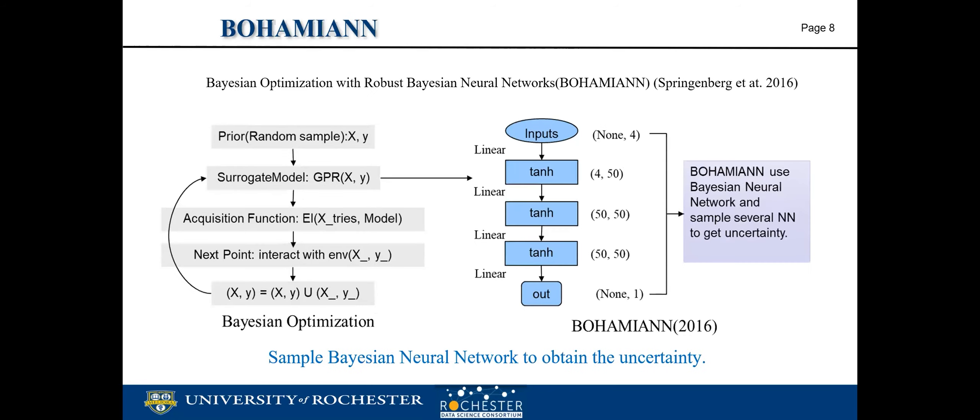This one is called BOMAN, Bayesian optimization with Hamiltonian Monte Carlo artificial neural networks. In their work, they have the same neural network structure as DNGO, but what's different is they regard each parameter of the neural network as a distribution instead of a value. So it is a Bayesian neural network. Since every parameter of the neural network is a distribution, in order to gain the uncertainty, they will just sample several neural networks and give the predictions. As each sampled neural network is different from each other, the predictions are also different, which allows us to gain the uncertainty.